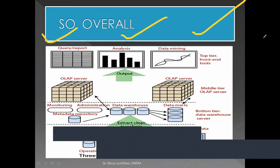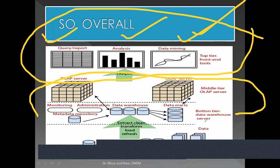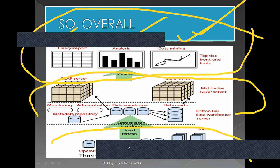Looking at the diagram again: query, report, analysis, and data mining — this is the topmost layer. The middle layer contains OLAP servers. The bottom-most layer is where we get our data, like operational databases or other sources such as Excel sheets. From there we extract, clean, and load to the middle layer, and from the middle layer we have query, report, analysis, and data mining tools as required.